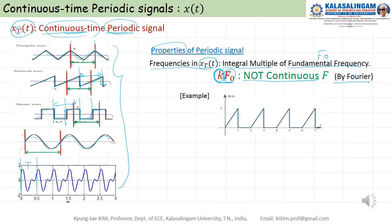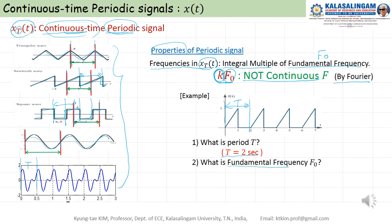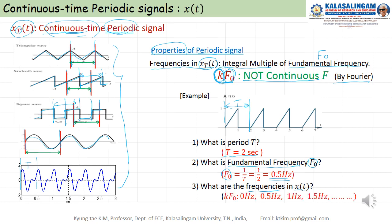For example, let's assume a periodic waveform with period T equal to 2 seconds. The fundamental frequency is f0 = 1/T = 1/2 = 0.5 Hz. The frequencies present in x(t) are k times f0: k=0 gives 0 Hz, k=1 gives 0.5 Hz, k=2 gives 1 Hz, k=3 gives 1.5 Hz, k=4 gives 2 Hz, and so on. These are the properties of periodic signals.